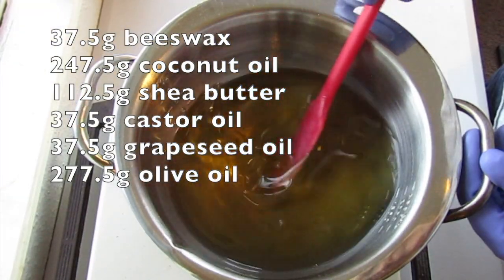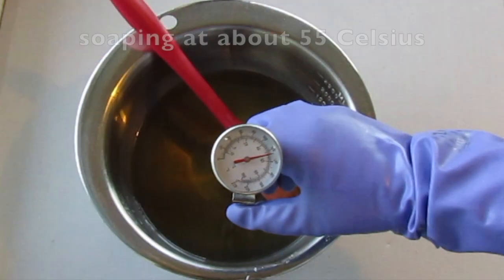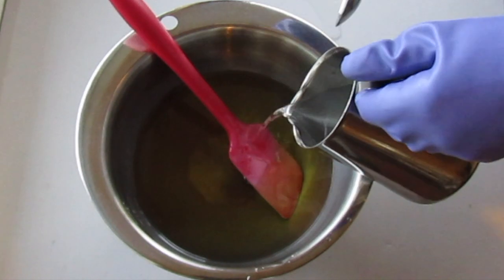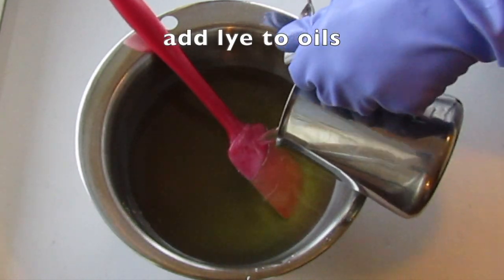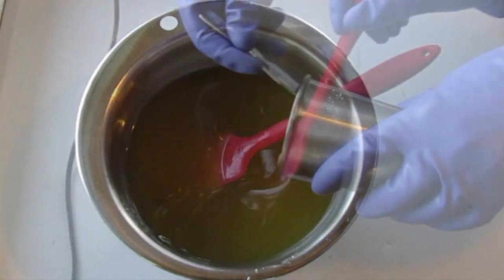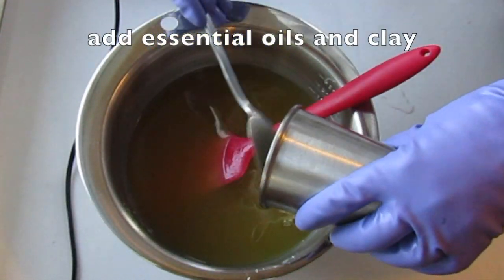I usually use a ratio of two parts water to one part lye for the lye solution because I want the lye to dissolve completely, at which point the solution will become clear and colorless. It's best to pour the lye onto the spatula or down the shaft of the stick blender to break the fall and reduce the chance of any splashes.